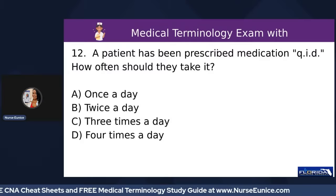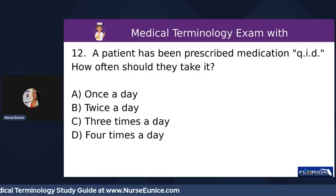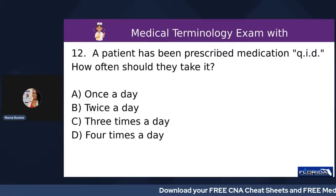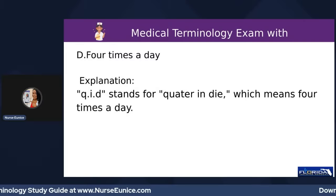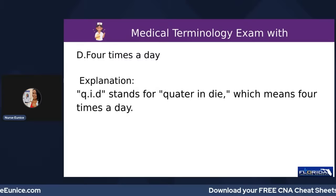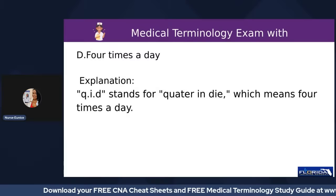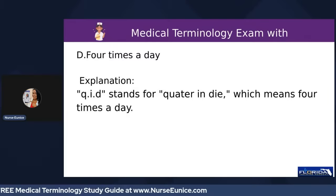Number twelve: a patient has been prescribed medication QID — how often should they take it? A) once a day, B) twice a day, C) three times a day, or D) four times a day. QID is four times a day. So: bi equals twice, tri equals three times, and Q or quad equals four.